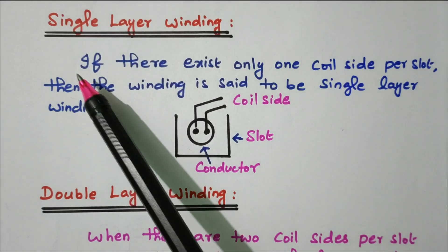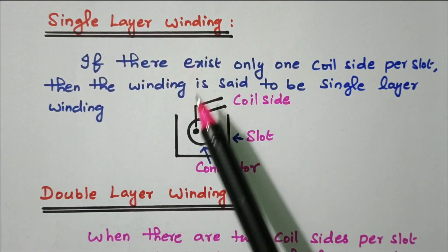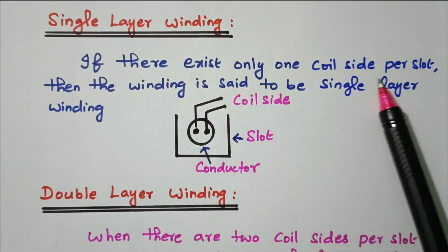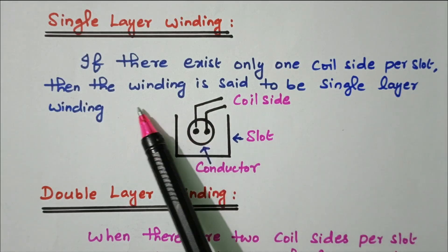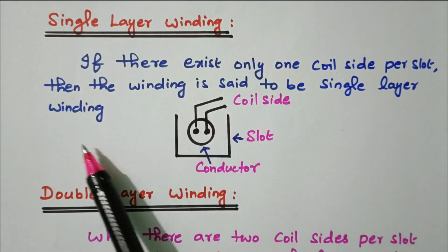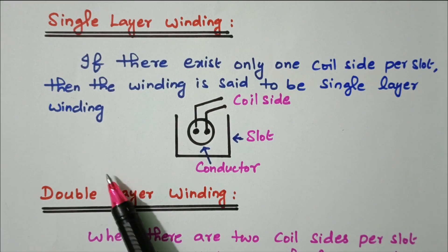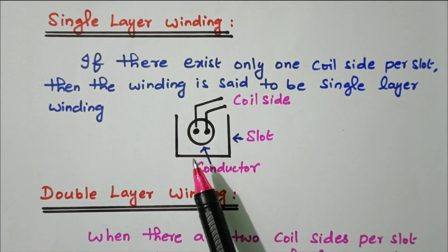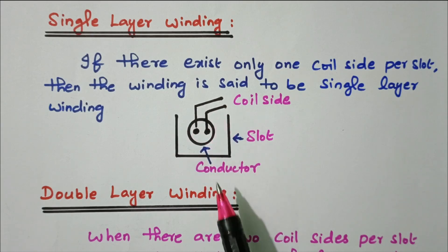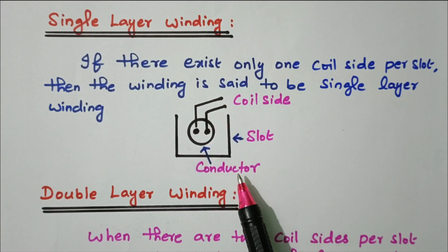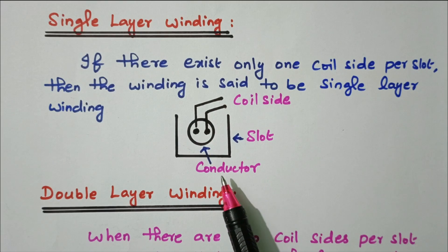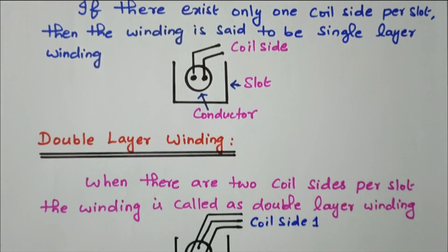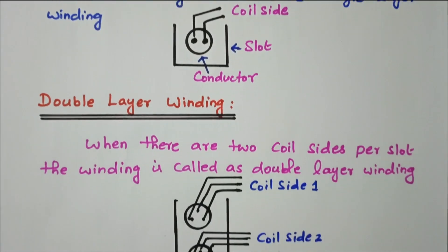First we'll see single layer winding. If there exists only one coil side per slot, then the winding is said to be single layer winding. In a slot, only one conductor is placed — only one coil side is available — so it is single layer winding.